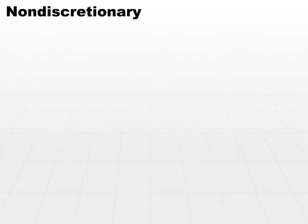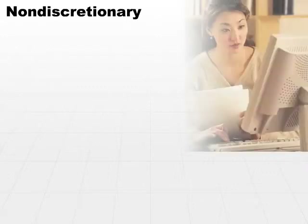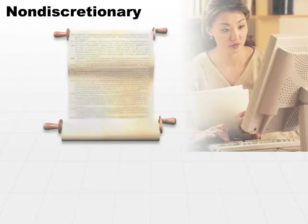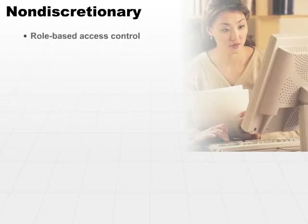We've looked at discretionary and mandatory access control. Let's take a look at non-discretionary access control. All this basically means is that instead of looking at the user or looking at the rules to decide whether or not a subject can access an object, we're going to look at the role to which the user belongs.